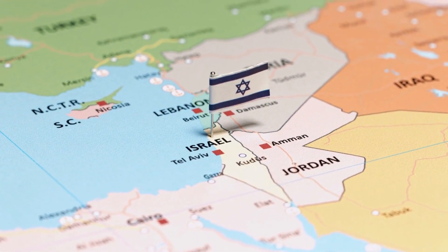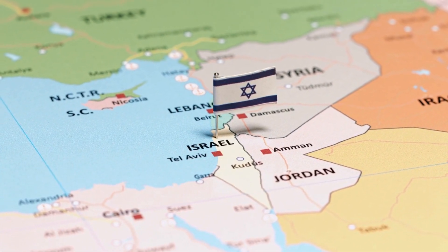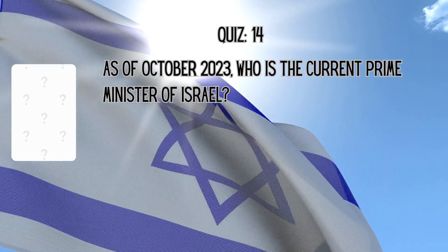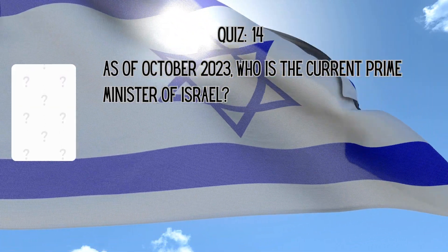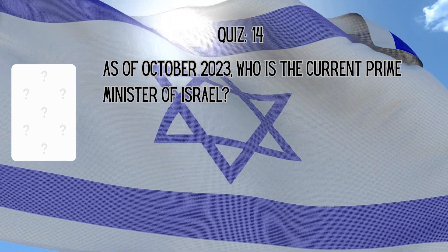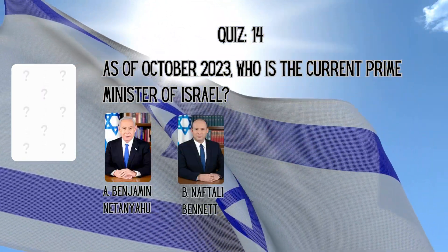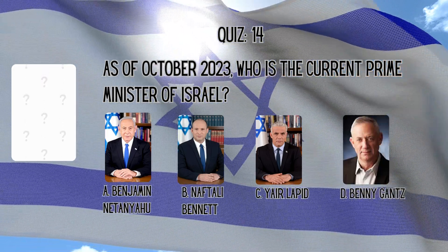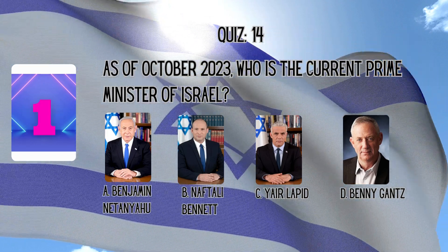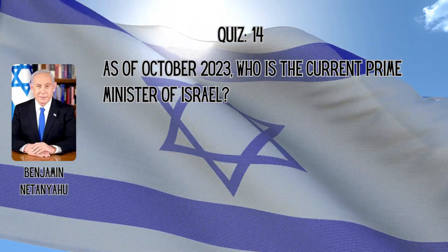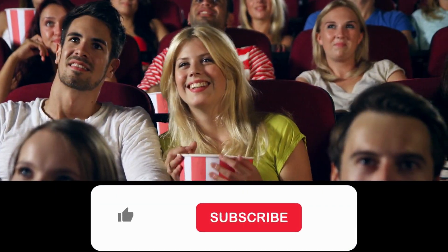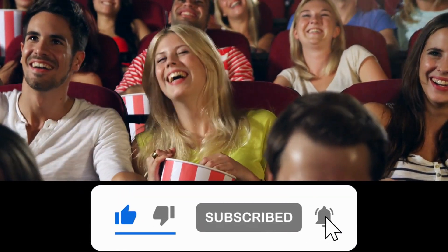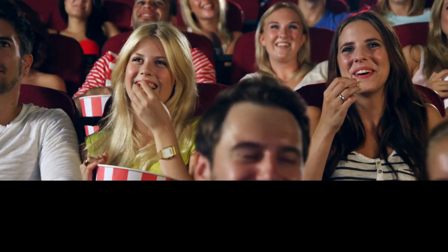Finally, we've come to the end of the challenge. Let's finish with this last question, which is often on everyone's lips. Who is the current Prime Minister of Israel as of October 2023? Is it A. Benjamin Netanyahu, B. Naftali Bennett, C. Yair Lapid, or D. Benny Gantz? The correct answer is Benjamin Netanyahu. Thanks for watching till the end. We hope to see you again in the next video — remember to like, share, and subscribe before you go.